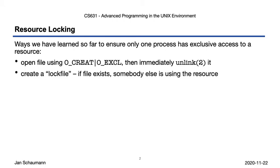Another way of ensuring exclusive access might be to use a lock file. We test for the existence of a file, and if we find it to be present, we know some other process is accessing the resource we're interested in, so we bail. Instead of using a lock file, we can use a semaphore, as we've shown in week 8, to protect the critical region in your code.